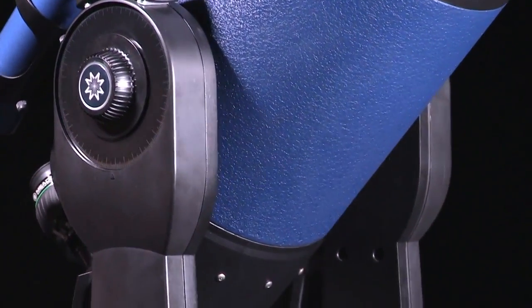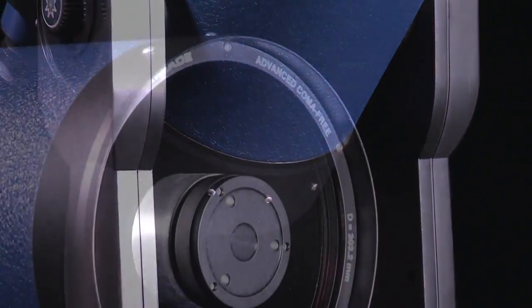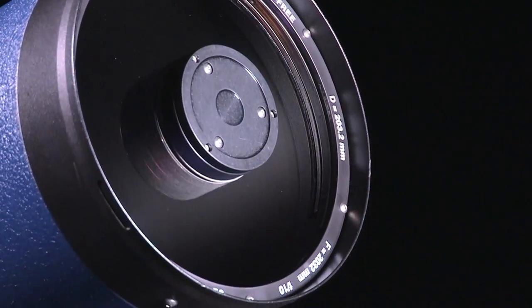The combination of the sturdy, yet portable dual-fork mount and superior optics makes the LX90 the most versatile telescope in its class, capable of both visual astronomy and astrophotography.